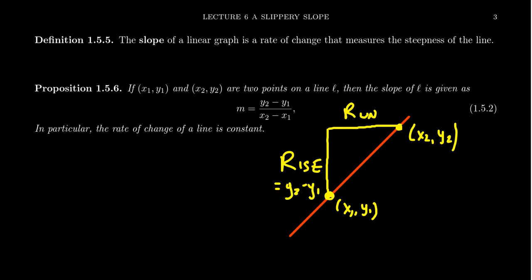We're gonna abbreviate this as delta y. The triangle there is the Greek letter delta. Delta is for difference here. Run is gonna be similar. If you want to go from this point to this point, the distance there is the difference of the x-coordinates. In which case we're going to get x2 minus x1, which is what we call delta x for short.